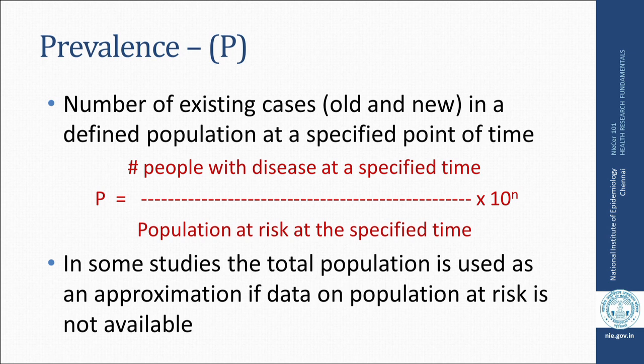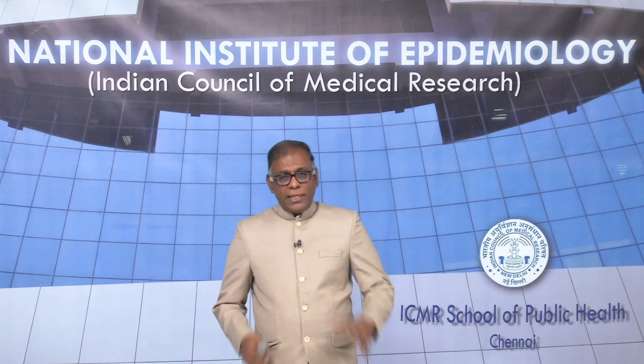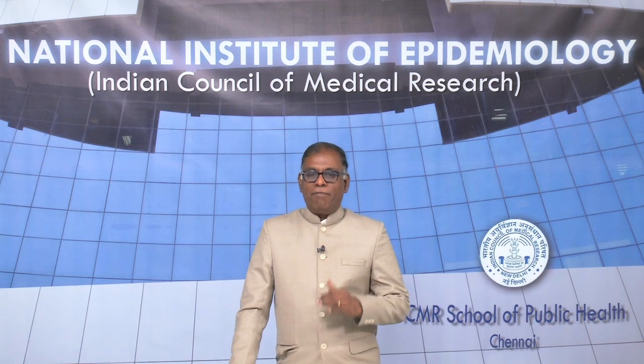Now let us look at a measure which is very often used in epidemiology and health research, called prevalence. Prevalence is the number of existing cases — both old and new — in a defined population at a specified point of time. P is equal to the number of people with disease at a specified time divided by the population at risk at the specified time, multiplied by a factor of 10 to the power n.